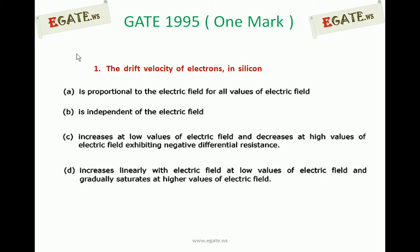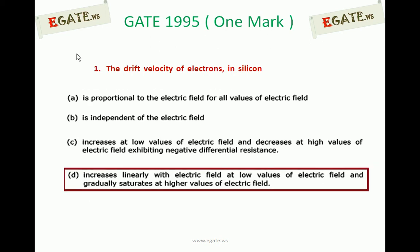This question is related to the Drift Velocity of Electrons in Silicon with respect to electric field — how the drift velocity varies with respect to electric field. The correct option for this question is D: drift velocity of electrons increases linearly with electric field at low values and gradually saturates at higher values of electric field.